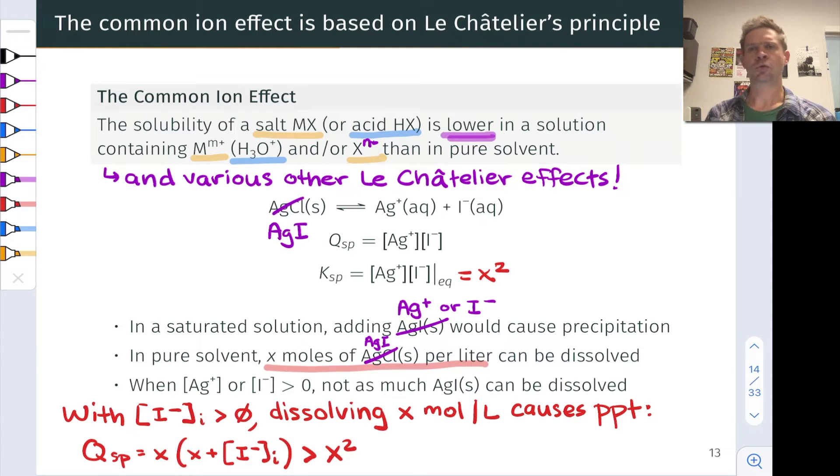To prove this, let's think about what Qsp is right after we've tried to dissolve the silver iodide in the iodide solution at a concentration of x moles per liter. Under that situation, we've added x moles per liter of silver cations, so Qsp is equal to x times the iodide concentration after the addition, which is x plus the initial concentration of iodide. Now, the initial concentration of iodide was greater than zero initially. So this product must be greater than x squared. This means that Qsp is greater than Ksp. We previously showed that Ksp is equal to x squared, and this implies that silver iodide will precipitate.